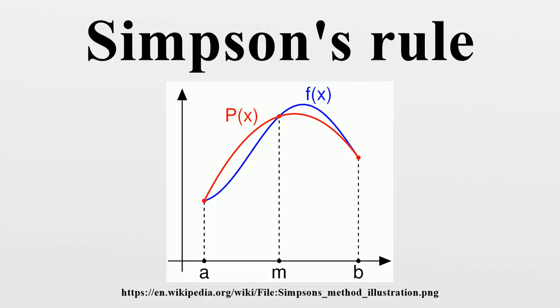One common way of handling this problem is by breaking up the interval into a number of small sub-intervals. Simpson's rule is then applied to each sub-interval, with the results being summed to produce an approximation for the integral over the entire interval. This sort of approach is termed the composite Simpson's rule.